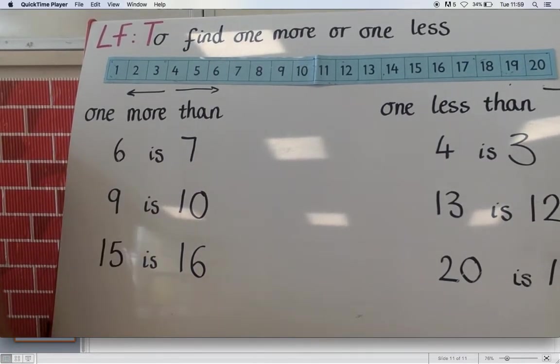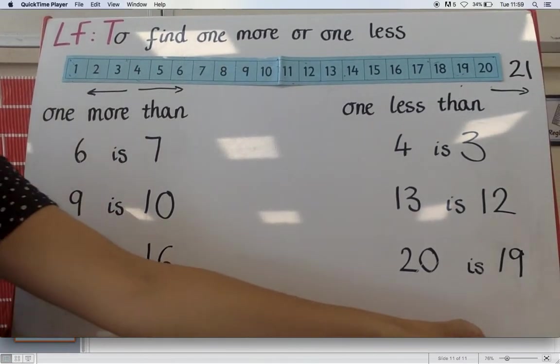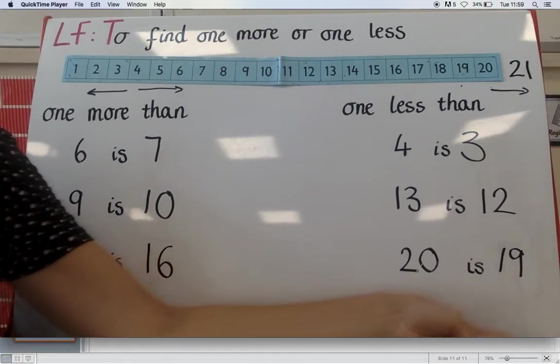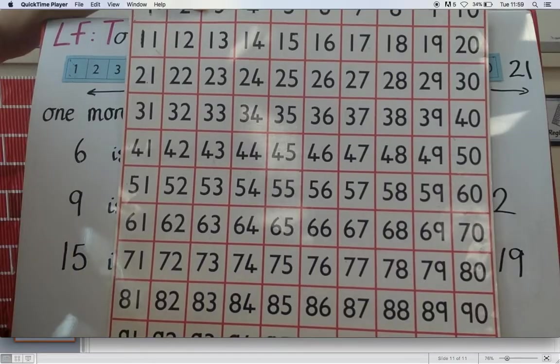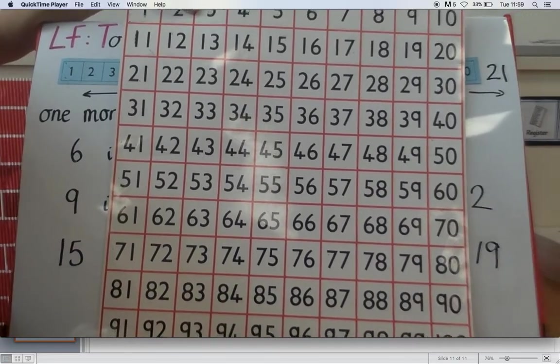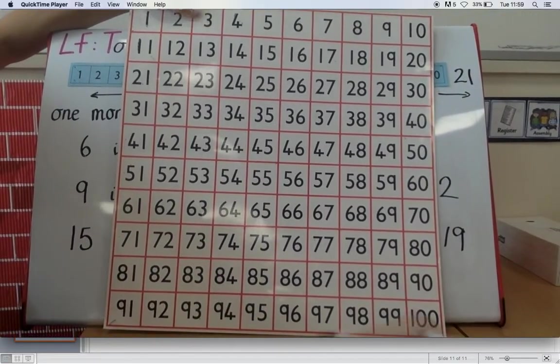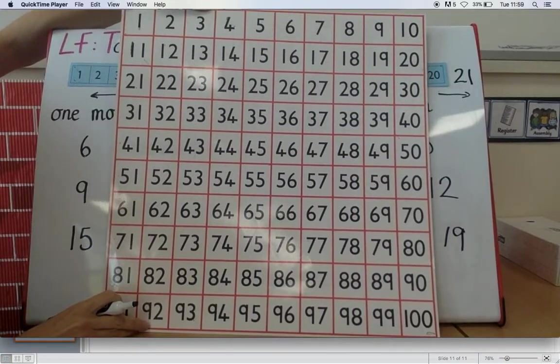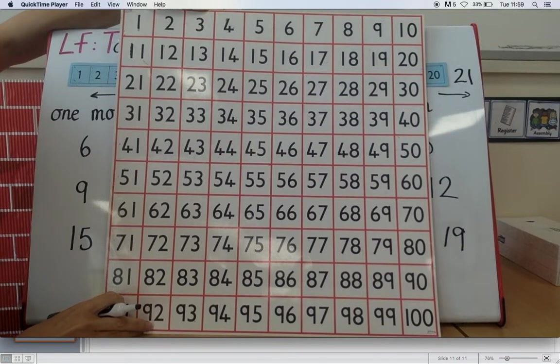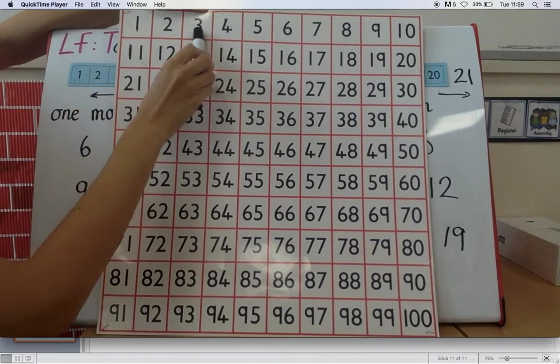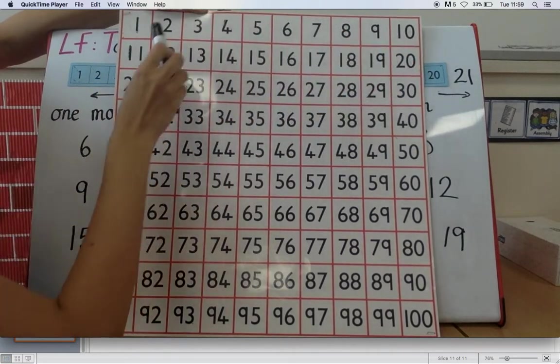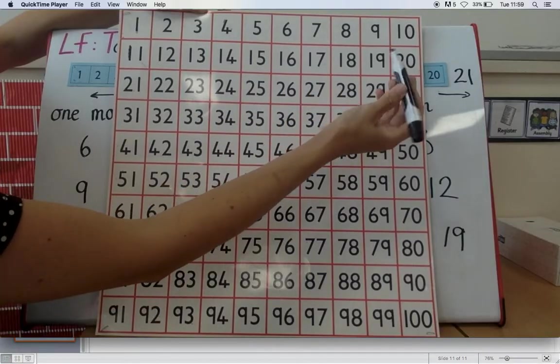Now if you're confident with your numbers zero to twenty you might want to try using a hundred square. Now you can find these online. You should be able to find a picture of one or if you want a challenge you could even draw one out yourself. You see how they start from number one. It goes all the way up to ten then new line to the next ten. Twenty.